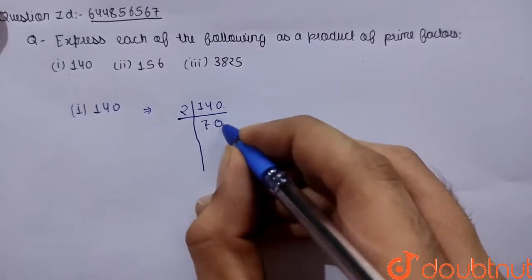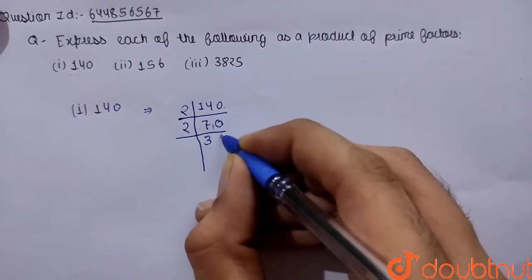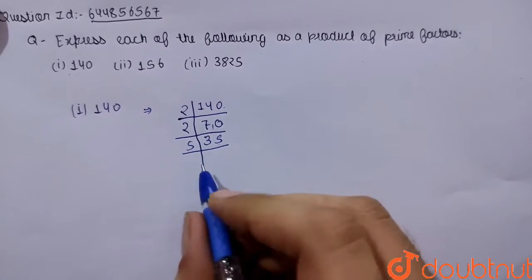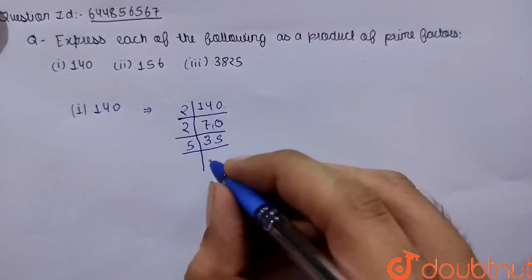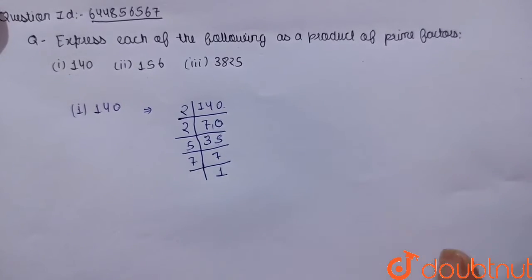So 2, 70. Again 2, 2, 3s are 6. Again 2, 5s are 10. We are having 5 in the end, so it will be divisible by 5. So 5, 7s are 35 and 7 is prime number. So 7, 1 times.